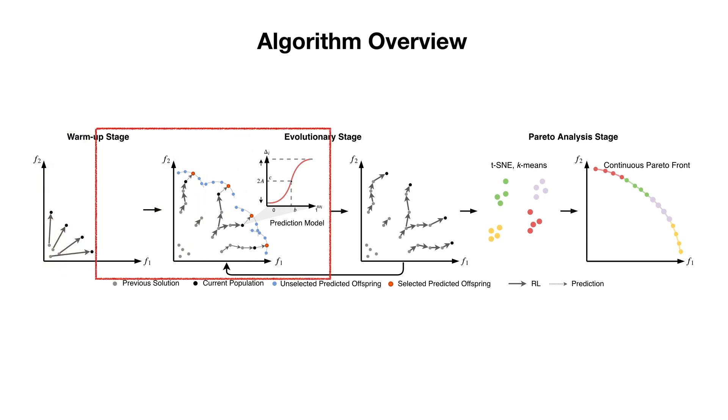The algorithm then enters the evolutionary stage. In each generation, we learn an analytical model for each policy to predict the expected improvement along each optimization weight.